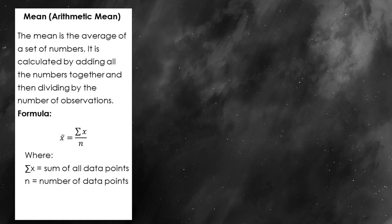The mean, also known as the arithmetic mean, is what most people refer to as the average. It's the value you get when you add up all the numbers in your data set and divide that sum by the number of data points. It's also incredibly powerful because it gives us a sense of the center of our data, even if the data itself is spread out or clustered in different ways.